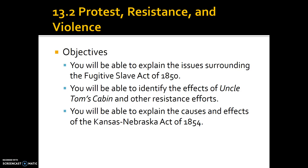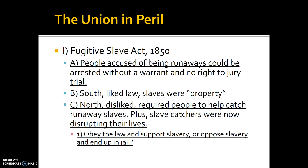Our objectives for this section are: you will be able to explain the issues surrounding the Fugitive Slave Act of 1850, you will be able to identify the effects of Uncle Tom's Cabin and other resistance efforts, and you will be able to explain the causes and effects of the Kansas-Nebraska Act of 1854.